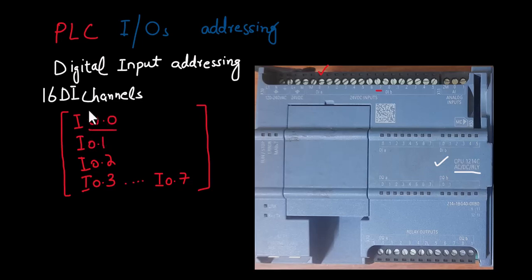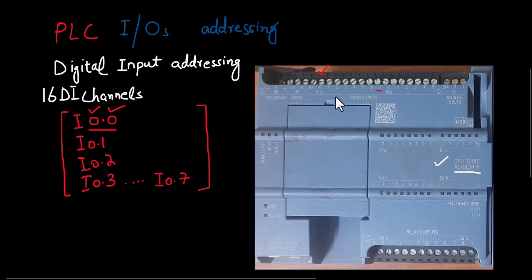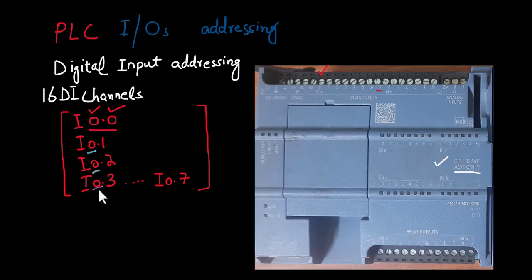As we have discussed in the PLC data types, a byte is one PLC data type and it has eight bits. So the number that is towards the left of the decimal point represents the byte number, while the number that is on the right side of the decimal point represents the bit number. So the first eight digital input channels will lie in the first byte, because a byte has eight bits — we will number it as byte 0. The input channel bits of each byte will be numbered from 0, 1, 2, 3, all the way to 7.